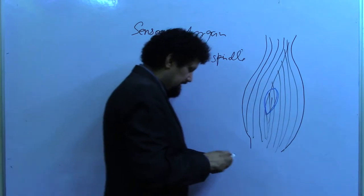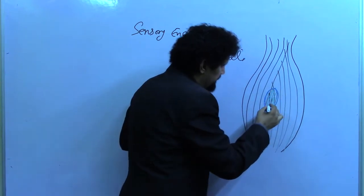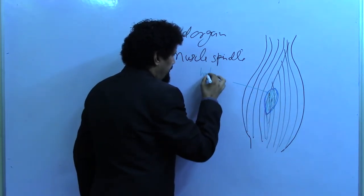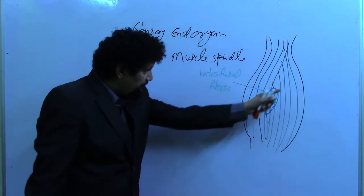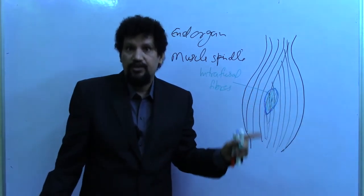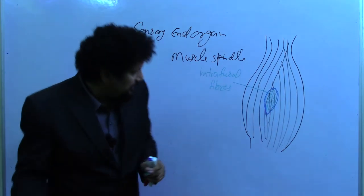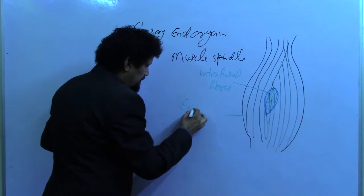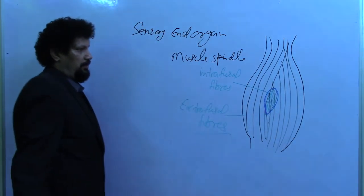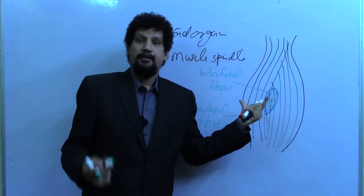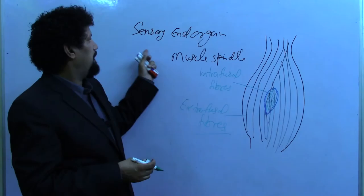The specialized fibers inside the capsule are known as intrafusal fibers. The longitudinal fibers of the muscle which are not specialized are known as extrafusal fibers.